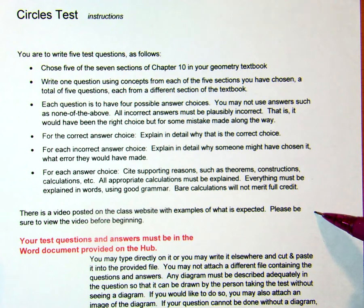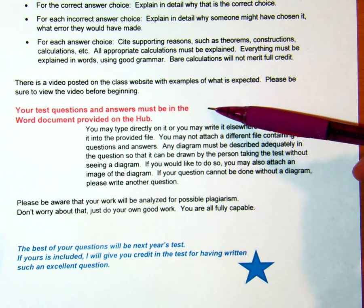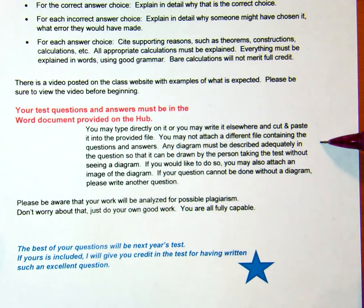I'm going to post this video so that you can see it if that will help you. This is important. Your test questions and answers must be in the Word document provided on the Hub. You may not make an attachment for it. You can either type it directly into the Word document that I'll place on the Hub or you can type it someplace else, cut and paste it into it. No images, no PDFs, no attachments, none of that. It's got to be typed into it. If you're going to have a diagram in it, you have to describe it so that someone can draw the diagram. If you do that, it's perfectly fine for you to also attach an image file of the diagram, but it has to be described so that someone can draw it without the image file.